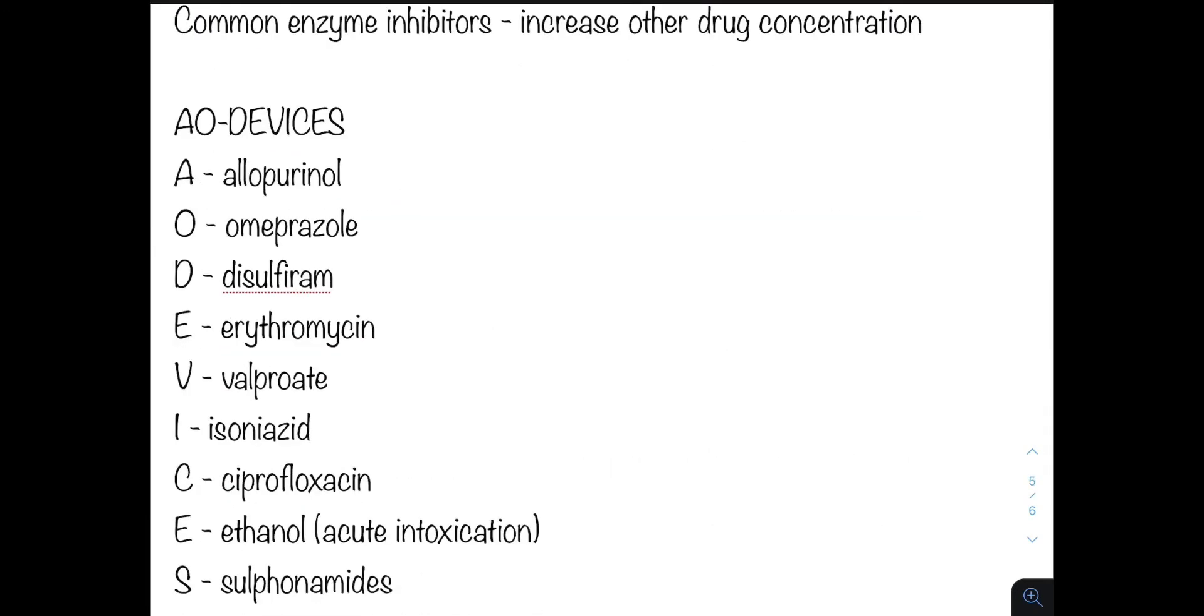On the other hand, enzyme inhibitors, which increase other drug concentrations, can be remembered by the mnemonic AO DEVICES. These include allopurinol used in treatment of gout, omeprazole a PPI, disulfiram used in treatment of chronic alcoholism, erythromycin an antibiotic, valproate an anti-epileptic, isoniazid another antibiotic used in treatment of tuberculosis, ciprofloxacin an antibiotic, acute alcohol intoxication, and sulfonamides which are antibiotics.